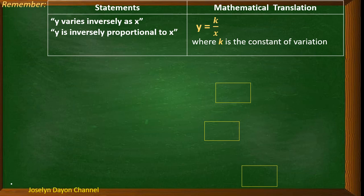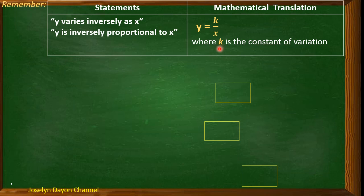Before we go on with translation — because translation is very important in solving worded problems — always remember that the statements 'y varies inversely as x' or 'y is inversely proportional to x' are both translated as y = k/x, meaning these two statements have the same translation because it's inverse. And k here is also the constant of variation.